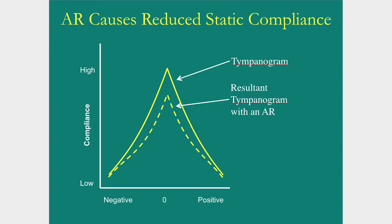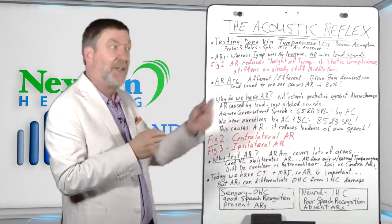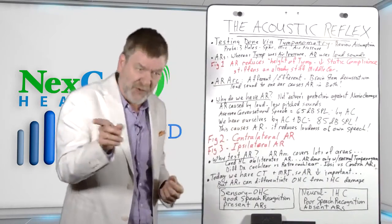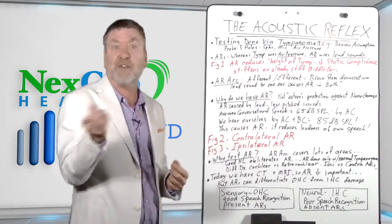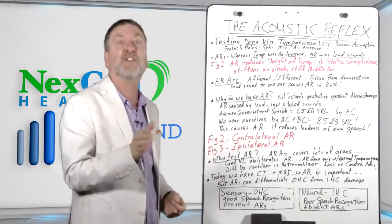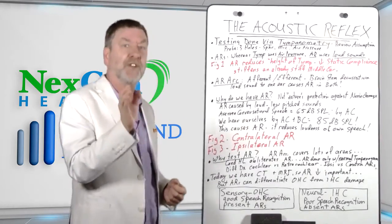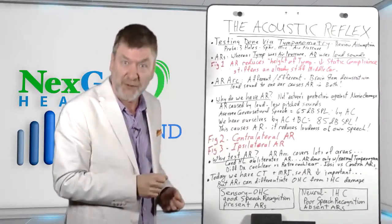At any rate, holding the air pressure with the probe at regular room air pressure, suddenly a loud sound is given to the ear. And when that occurs, an acoustic reflex occurs, thus changing the height of the tympanogram. Whereas tympanometry uses air pressure to change the amount of sound bouncing off the drum, the acoustic reflex uses a loud sound to alter the amount of sound bouncing off the drum.